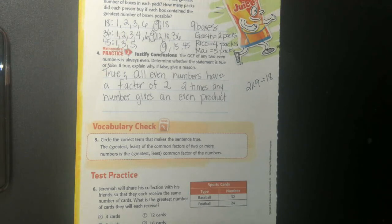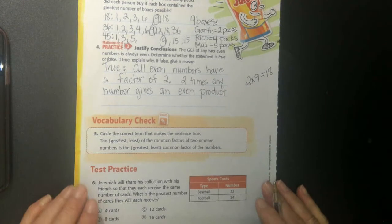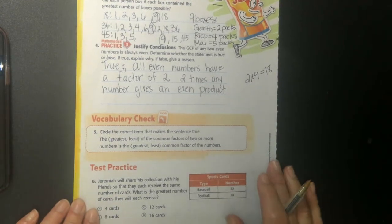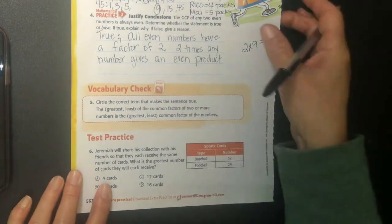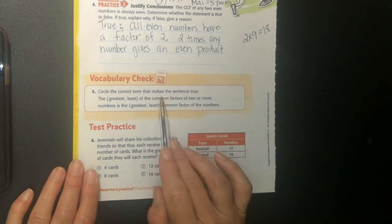Two, four, six, eight, ten, twelve, fourteen, sixteen, eighteen, twenty. All right, so I'm going to keep going down at the bottom. It says, circle the correct term that makes this sentence true.